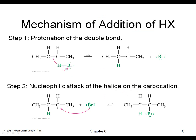Here's an example with HBr. The pi electrons attack the hydrogen, which is delta-plus. We choose one of the two carbons to add it on, and then in the second step the bromine attacks the positive charge.